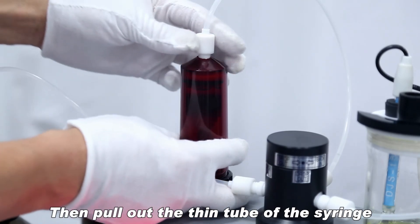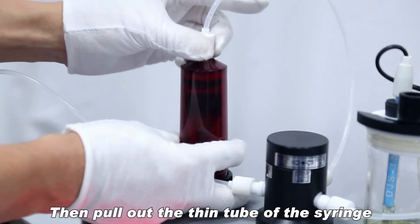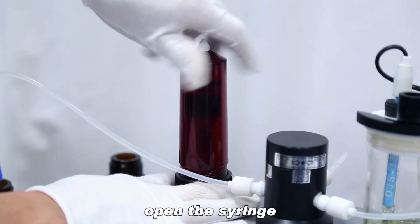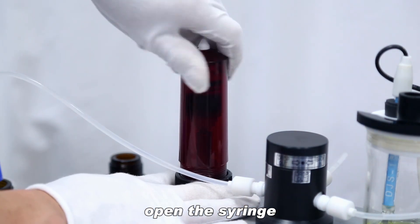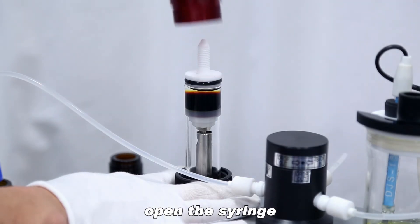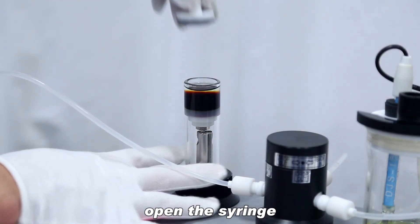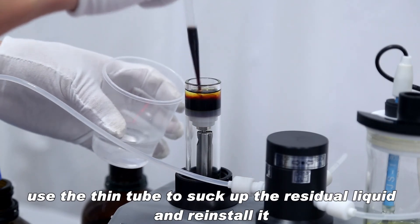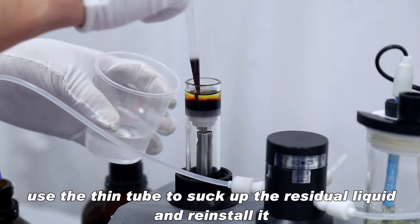Then pull out the thin tube of the syringe. Open the syringe. Use the thin tube to suck up the residual liquid and reinstall it.